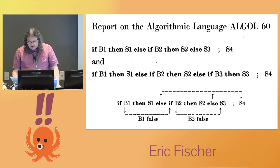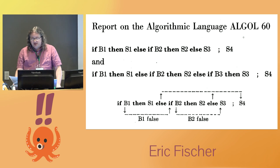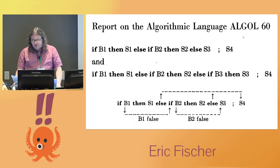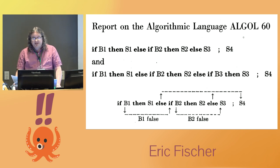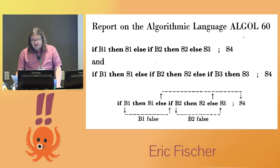If-then-else was the single conditional form that then appeared in the ALGOL 60 report the next year, and is the form that almost all subsequent programming languages have followed. Although it seems clear to us now, it was hard for people in 1960 to think about, and the report spends a page and a half explaining how it works, including an arrow diagram.